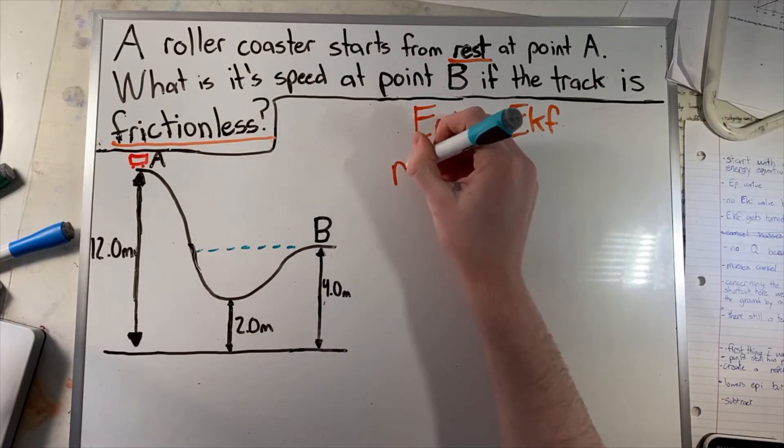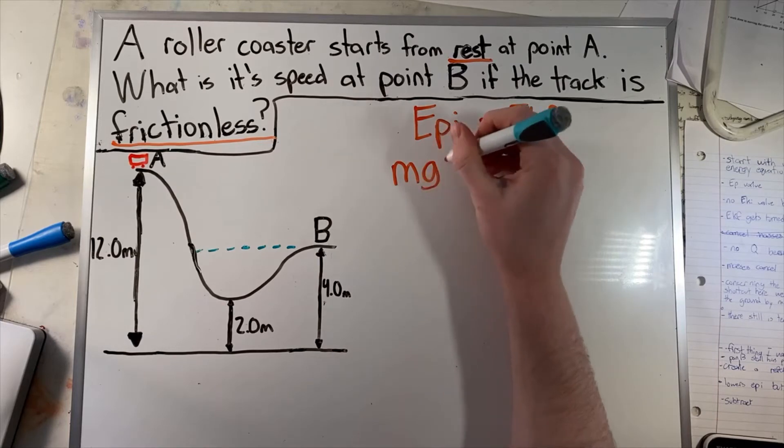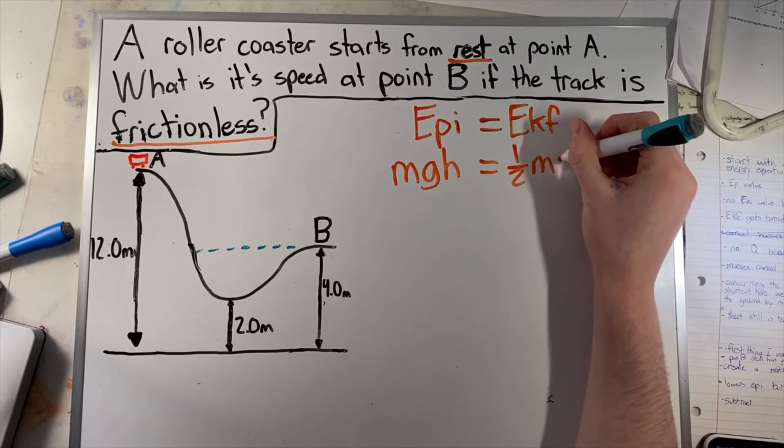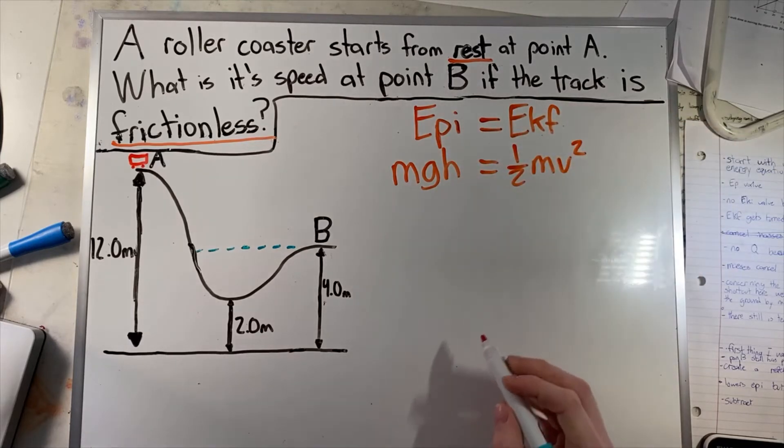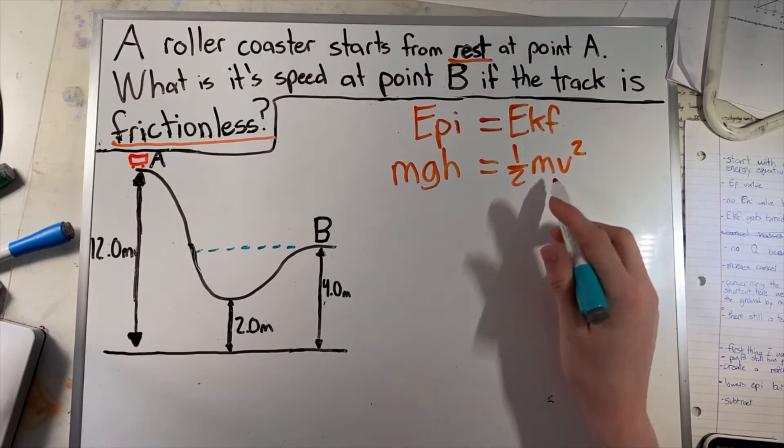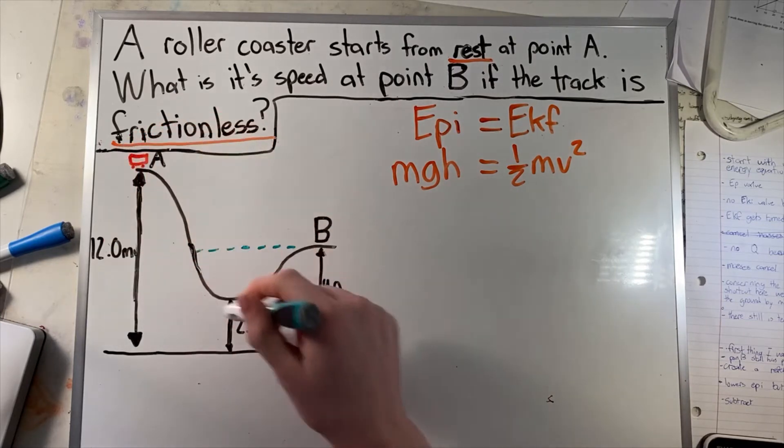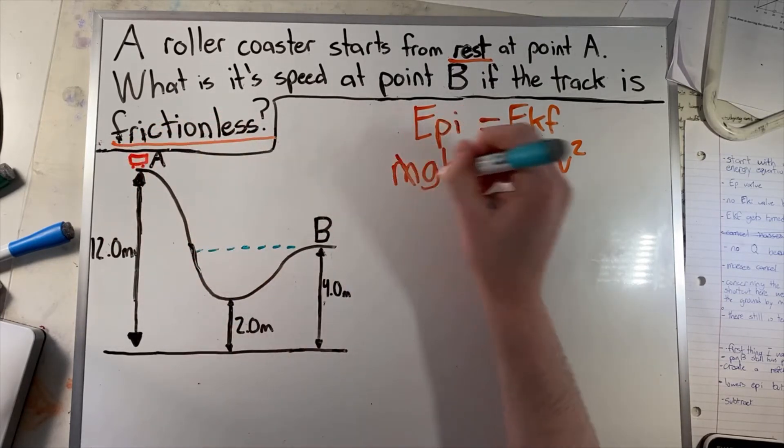So if we write this out, this turns into the mass times gravity times height, which equals one half the mass times velocity squared. Right away we notice that the mass is the same on both sides because it's the same mass of the roller coaster going down the track, so we can cancel out the masses.